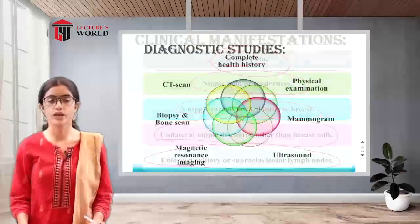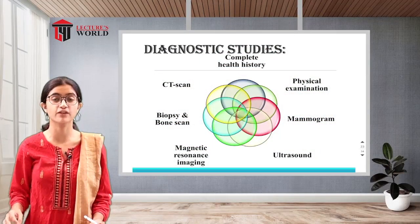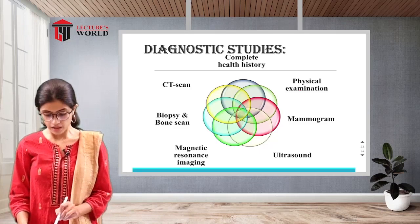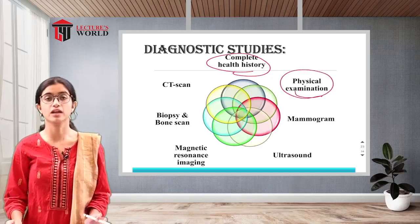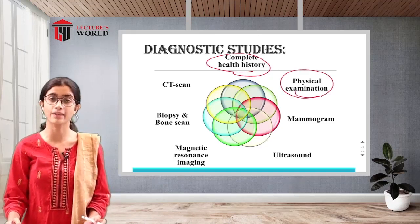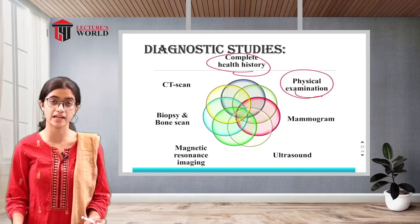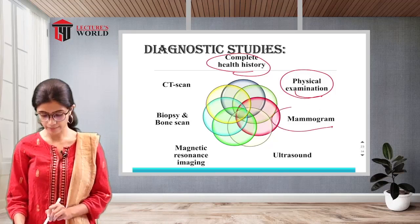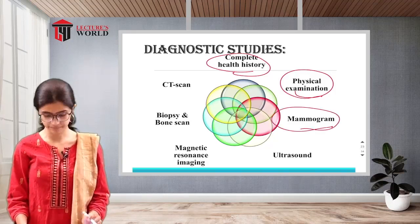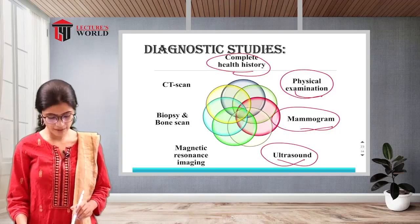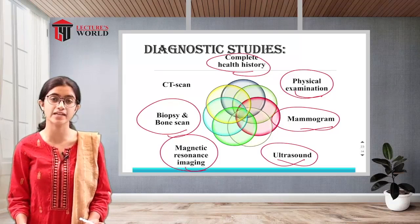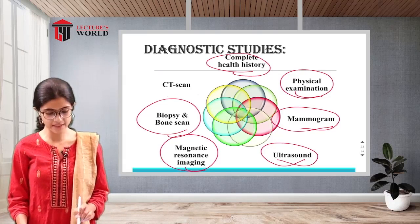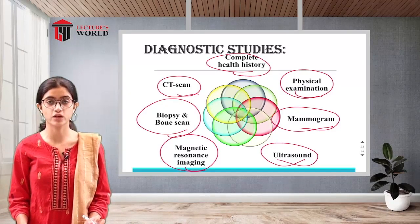Diagnostic tests to confirm breast cancer include: a complete health history identifying genetic information; physical examination including breast self-examination and clinical breast examination; mammogram (an X-ray of the breasts); ultrasound; magnetic resonance imaging (MRI); biopsy; bone scan to check for metastasis; and CT scans to provide better images of abnormal cells.